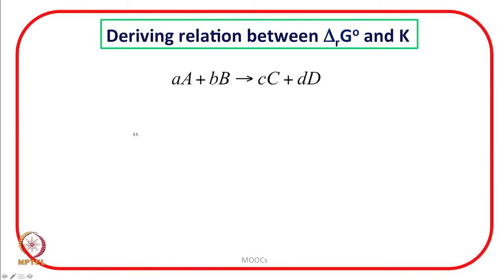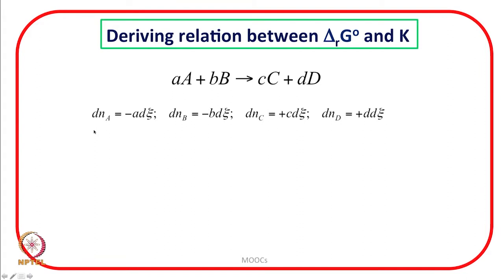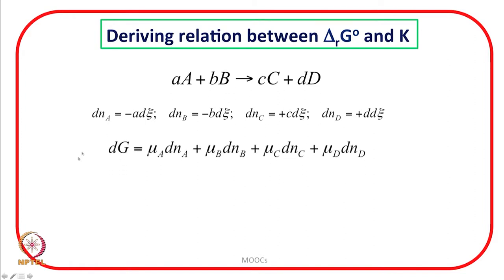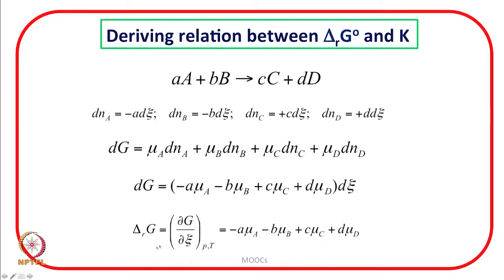Going to the slide: we started with the general reaction a moles of A plus b moles of B forming c moles of C plus d moles of D. We defined the change in amount of A, B, C, and D in terms of the extent of reaction ξ, where dξ is a small advancement. Negative sign comes with the reactants because they are consumed, and positive sign with the products because product is being formed. Then we expressed dG in terms of chemical potentials at constant pressure and temperature.